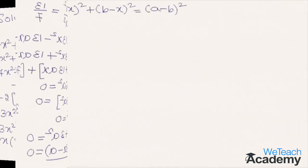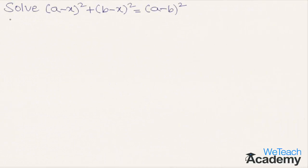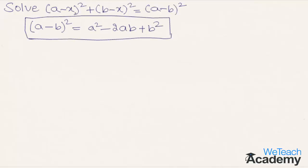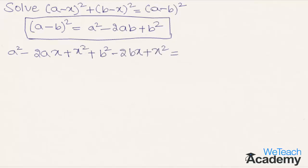Now let us proceed and solve another example. Here we have: solve (a minus x) whole squared plus (b minus x) whole squared equal to (a minus b) whole squared. All terms are in the form of (a minus b) squared which equals a squared minus 2ab plus b squared. So expanding: (a minus x) squared is a squared minus 2ax plus x squared, (b minus x) squared is b squared minus 2bx plus x squared, and (a minus b) squared is a squared minus 2ab plus b squared.